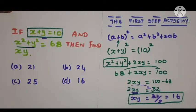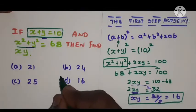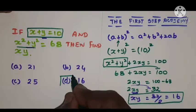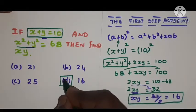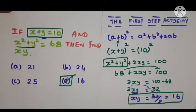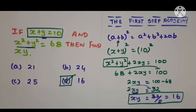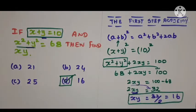x into y is equal to 16. Looking at the options, option D is matching the answer — option D, 16, is the right answer for this question.